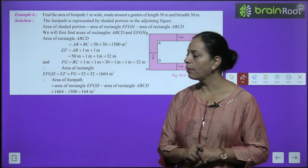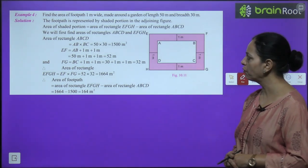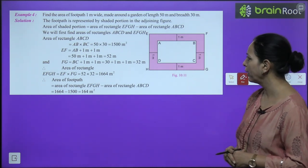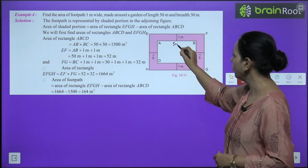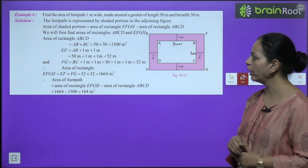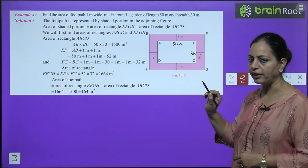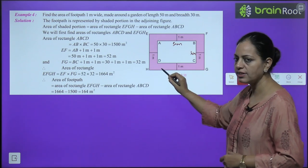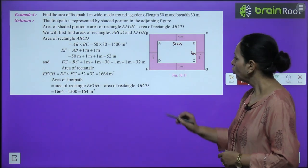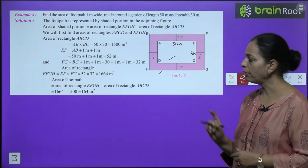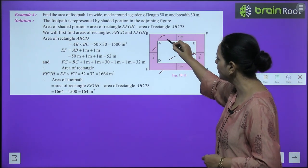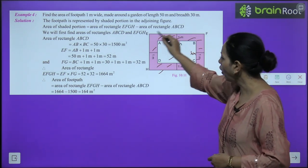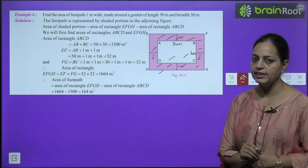Example 4: Find the area of a footpath 1 meter wide made around a rectangular garden of length 50 m and breadth 30 m. The footpath creates a larger outer rectangle. Outer length = 50 + 1 + 1 = 52 m; outer breadth = 30 + 1 + 1 = 32 m. Area of footpath = area of outer rectangle EFGH − area of inner rectangle ABCD.